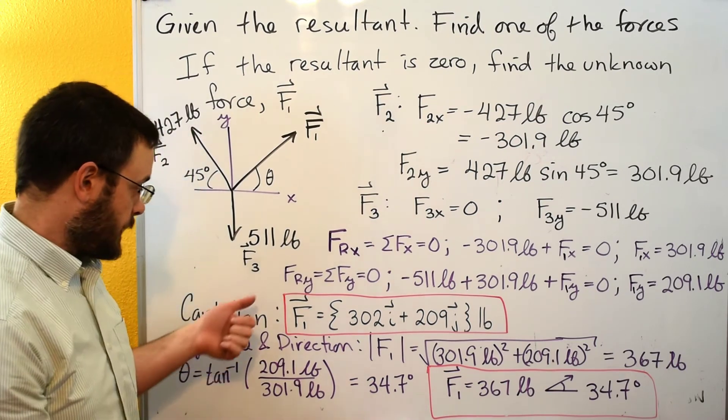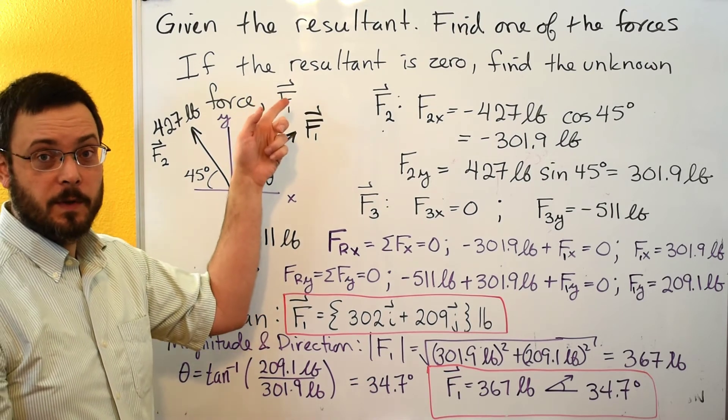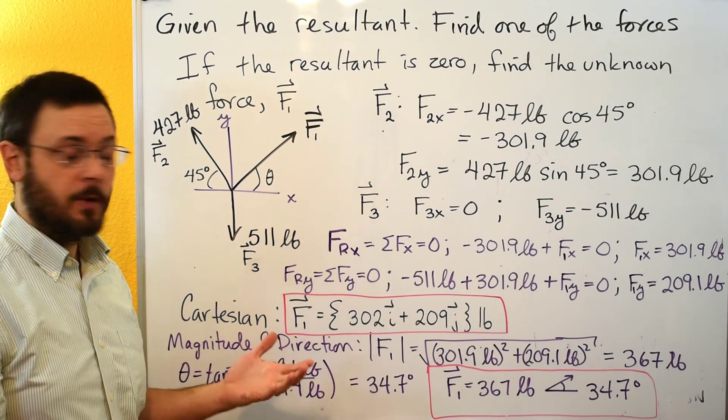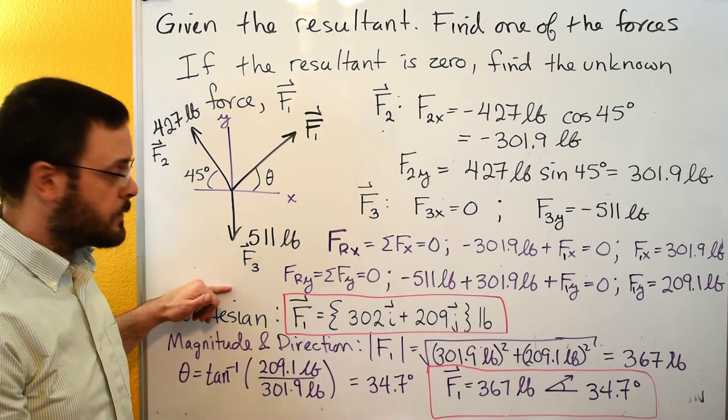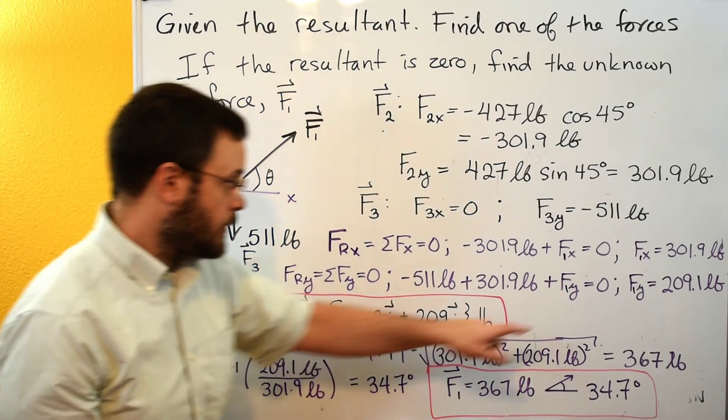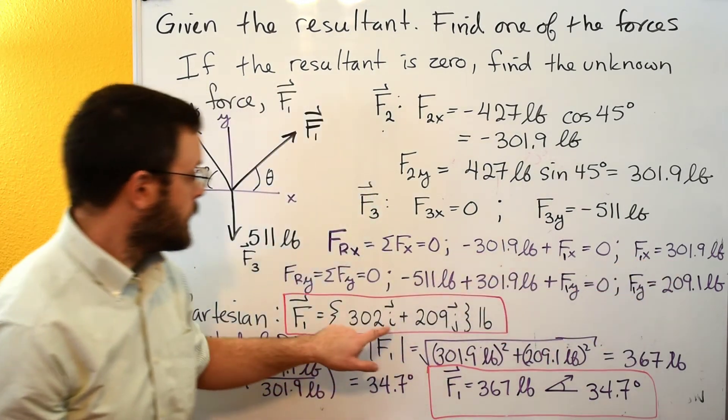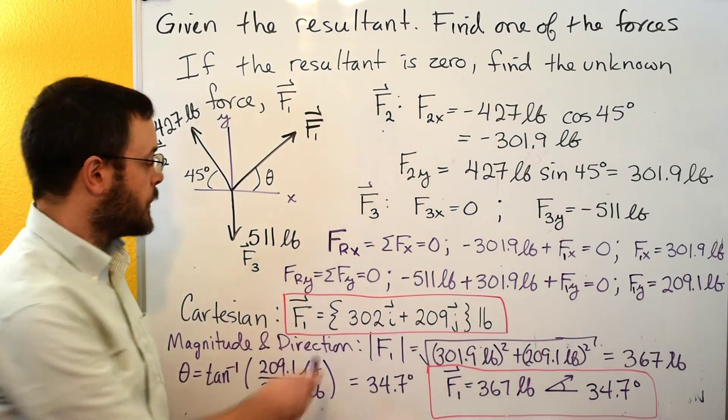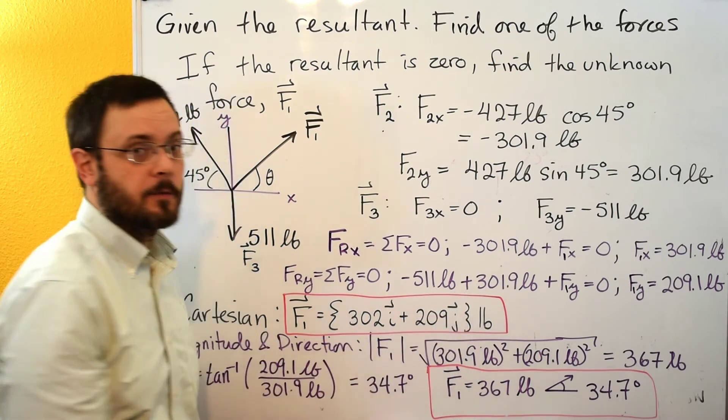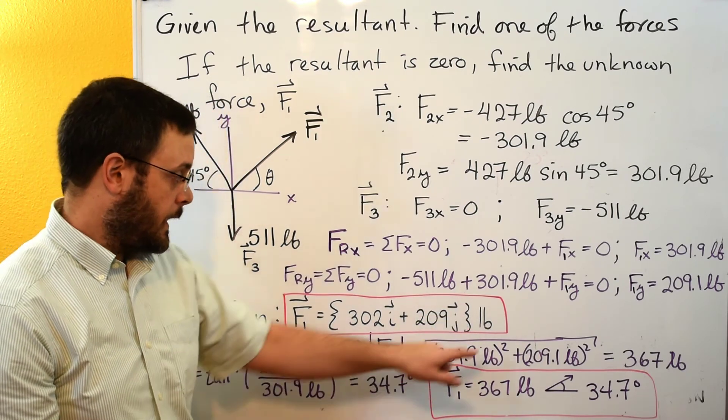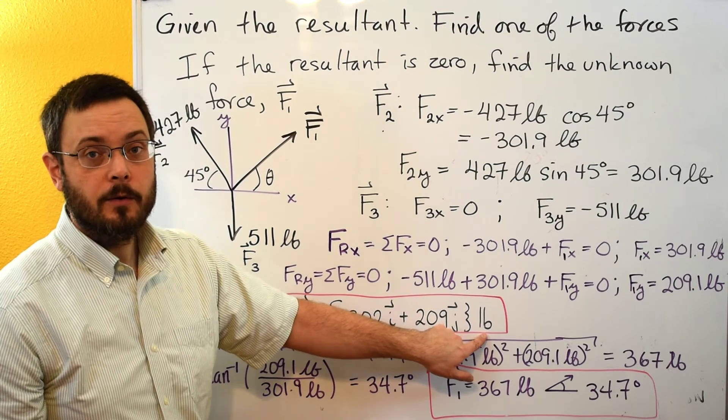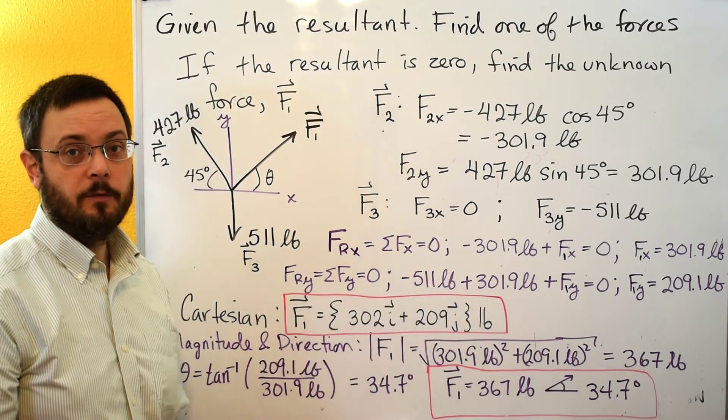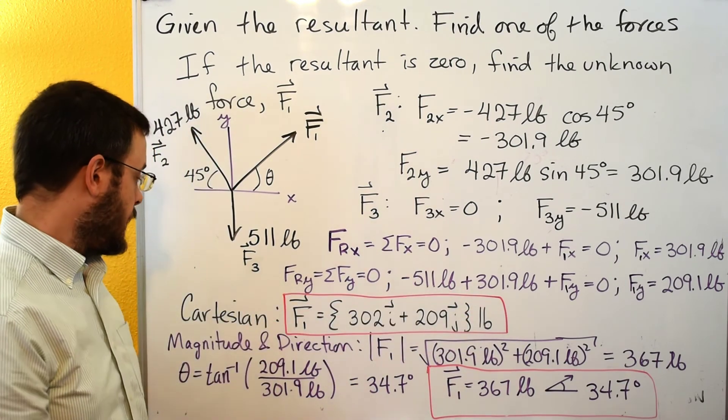Then we can report this one of two ways. Typically the problem statement's going to tell you which way they want it. I left it open-ended just so we can show both ways. The first way is as a Cartesian vector. As a Cartesian vector, you take your x component, stick it in front of i, you take your y component, and stick it in front of j. Put the curly braces at the beginning and end of your Cartesian notation, and then put your unit out here at the very end outside of the brace. So this would be our answer if they had asked for F1 in Cartesian notation.